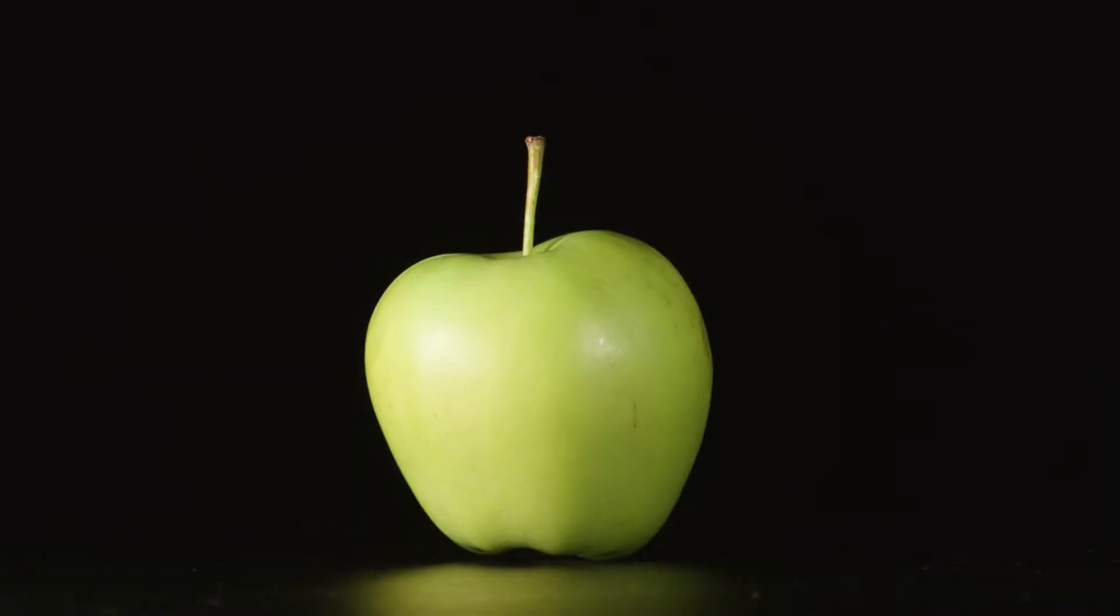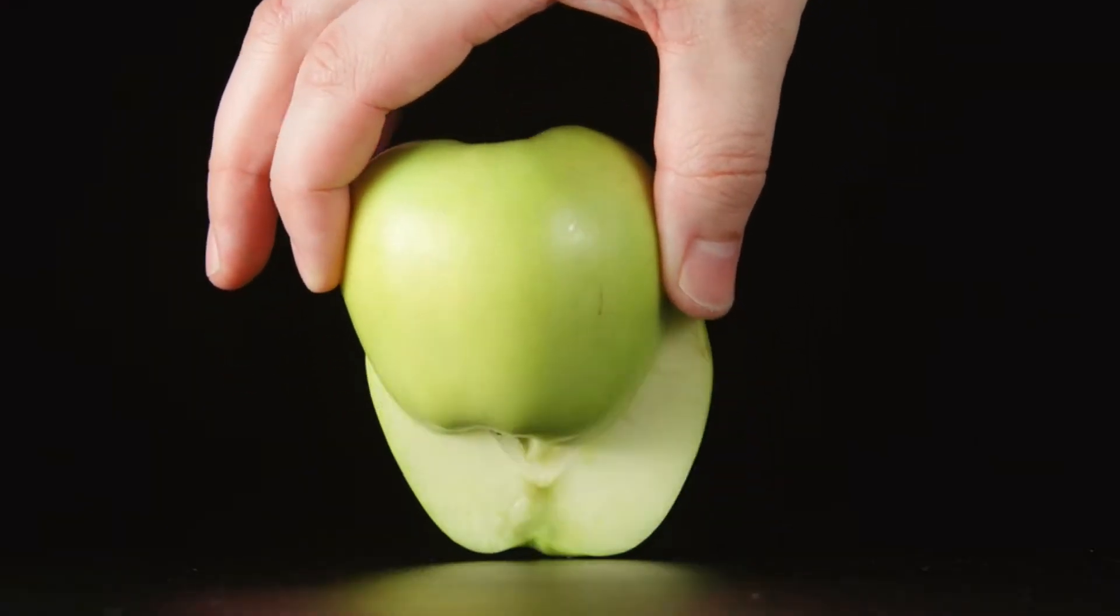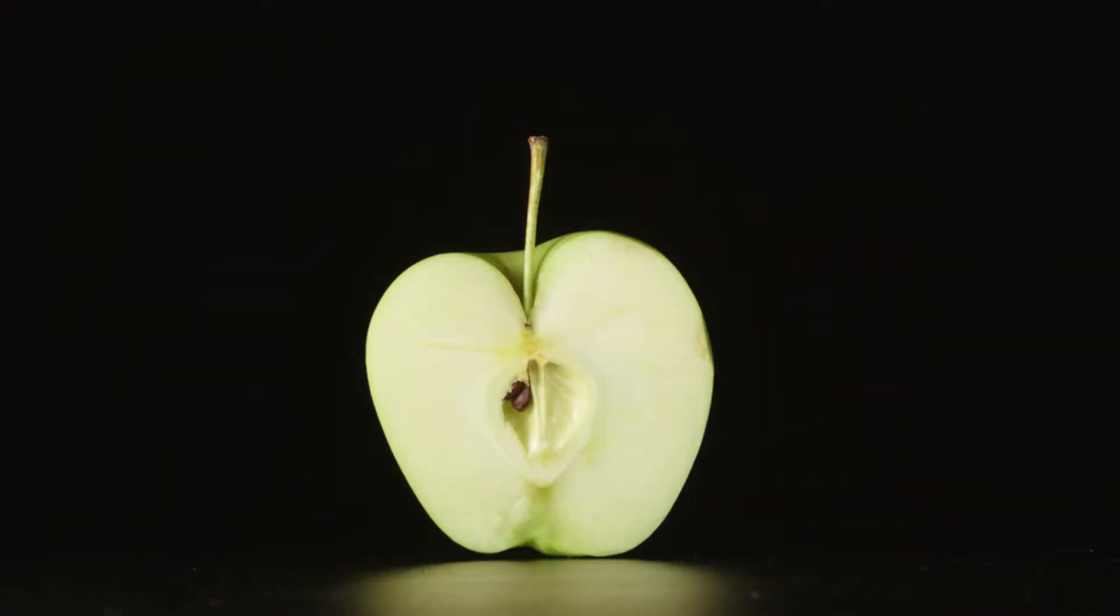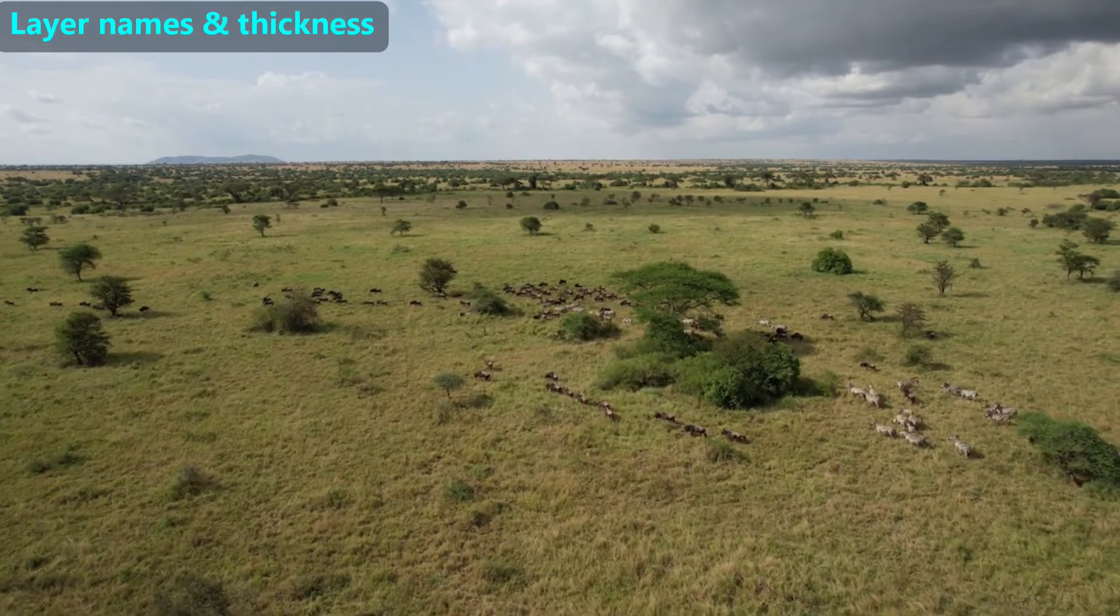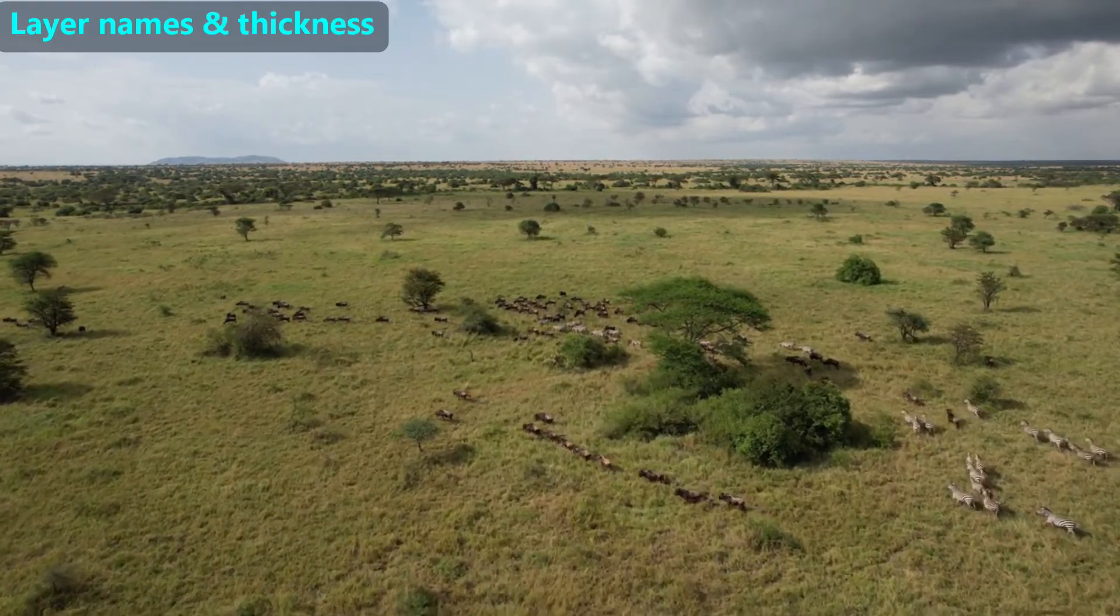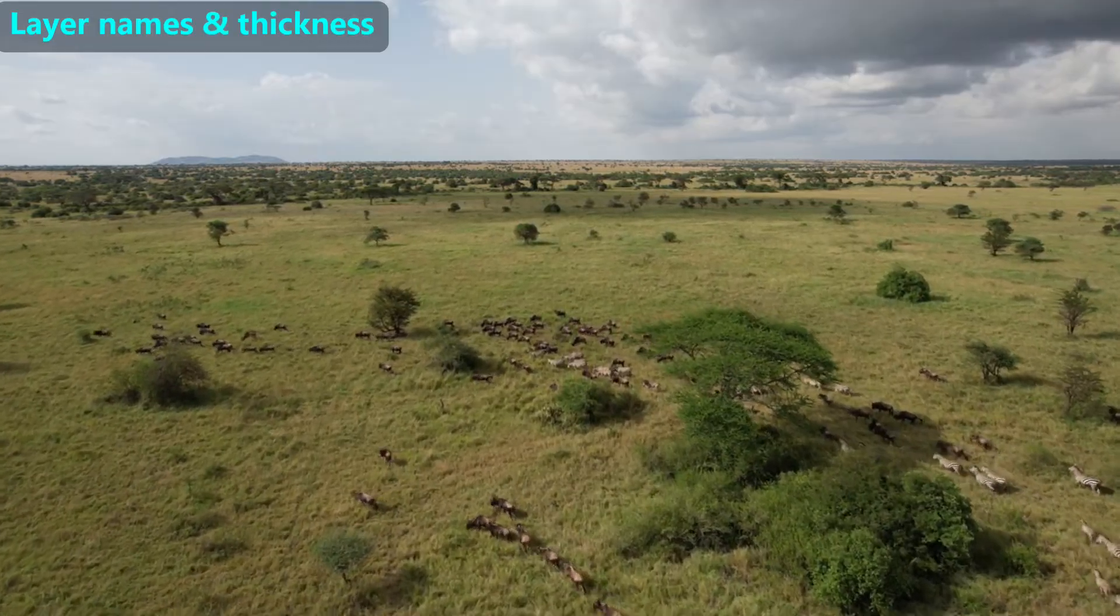Before we show more technical models, let's pretend the Earth is the size of this apple. The name for the outermost layer of the Earth is the crust. Just like an apple, the outermost layer is very thin, but this is where we and all living things live.